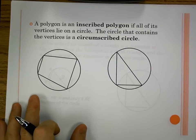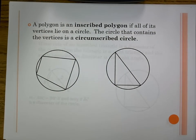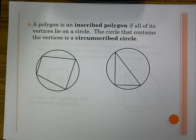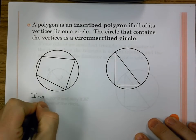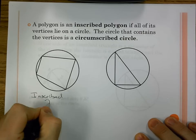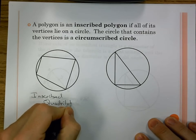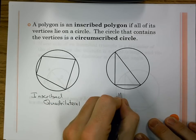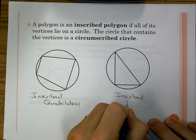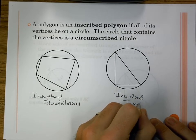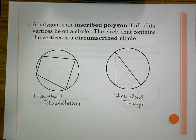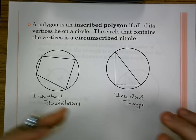Now let's look at inscribed polygons. An inscribed polygon is a polygon where all vertices lie on a circle, and the circle that contains those vertices is the circumscribed circle. We're going to look at two types: an inscribed quadrilateral and an inscribed triangle, though any polygon — hexagon, octagon — could be inscribed.